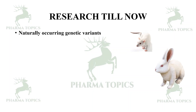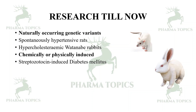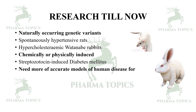Until now, in research we used animals which have naturally occurring genetic variants in pharmacological experiments. Some of them are spontaneously hypertensive rats, hypercholesterolemic Watanabe rabbits, and some are chemically or physically induced models — for example, streptozotocin-induced diabetes mellitus. But we need more accurate models of human disease.